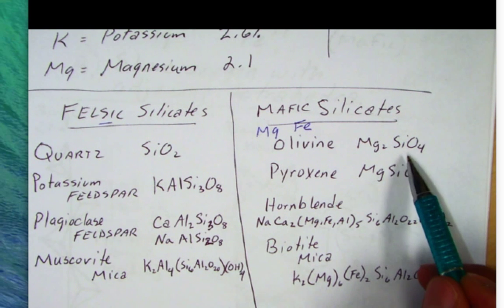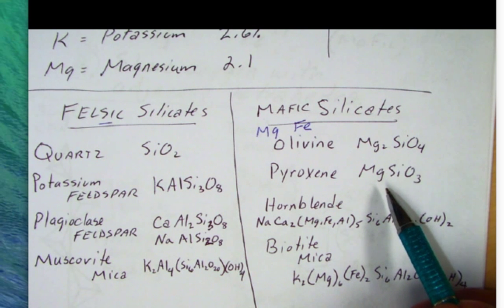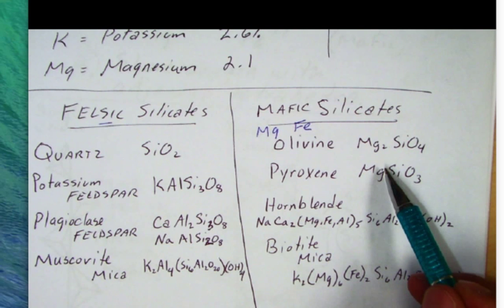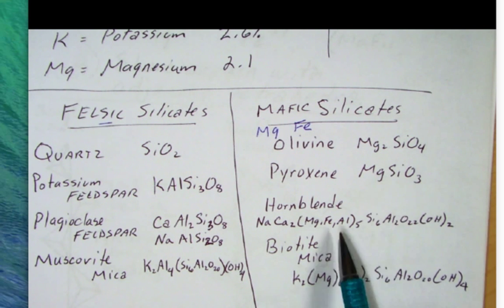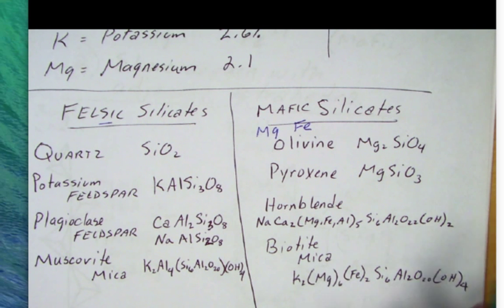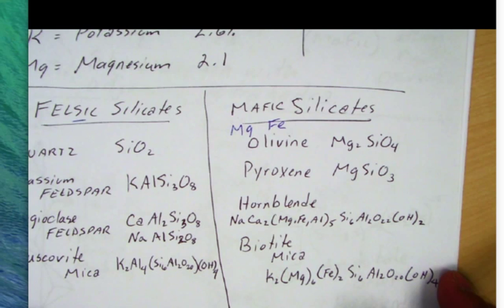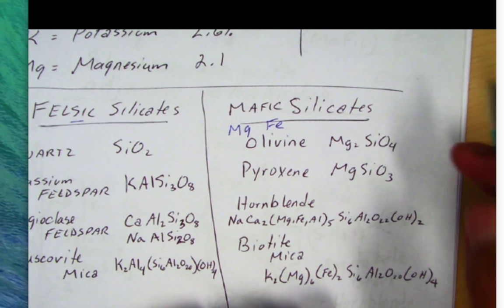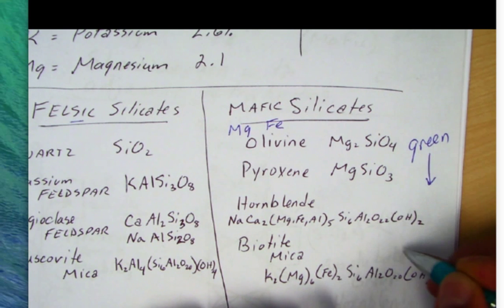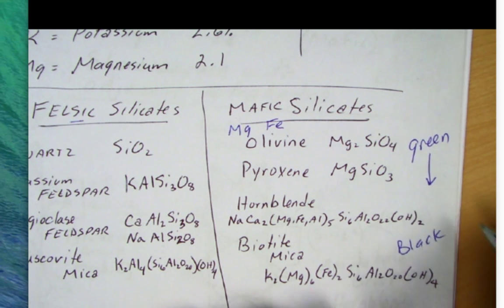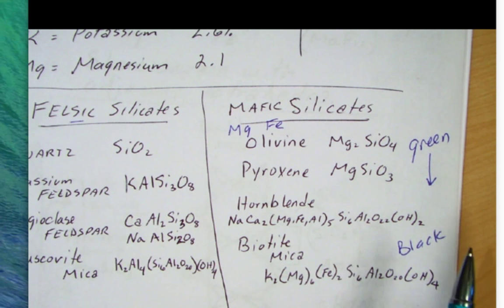Olivine occurs in basalt volcanic rocks. Pyroxene does as well. Note that they have quite a bit of magnesium, and there are also varieties that have iron in them. A mineral called hornblende and then biotite mica. One thing that these mafic minerals share in common: they're either going to be green to black. Biotite mica is a very dark black and so is hornblende. Pyroxene is kind of a dark green.